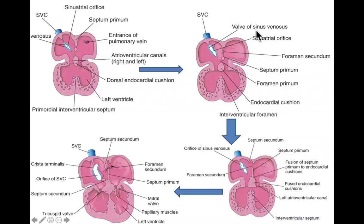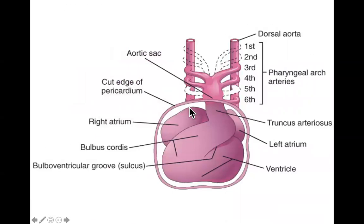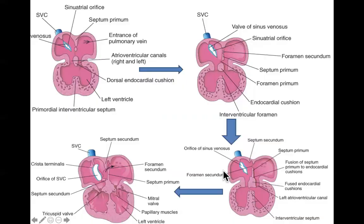Welcome to part two of lecture number 13, covering chapter 14 - the cardiovascular system. Last time we talked about how the heart chambers form largely by the folding of the heart. The cardiac sac folds in on itself to accommodate everything - that's how the different chambers form. Today we're going to talk about how the walls that separate the chambers form.